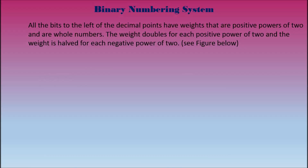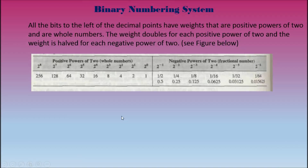All bits to the left of the decimal point have weights that are positive powers of 2 and are whole numbers. The weight doubles for each positive power of 2, and the weight is halved for each negative power of 2. On the figure: 2 to the power of 0 is 1, 2 to the 1 is 2, 2 to the 2 is 4, 2 to the 3 is 8, 2 to the 4 is 16, 2 to the 5 is 32, 2 to the 6 is 64, 2 to the 7 is 128, and 2 to the 8 is 256. On the negative side: 2 to the negative 1 is 0.5, 2 to the negative 2 is 0.25, 2 to the negative 3 is 0.125, 2 to the negative 4 is 0.0625, and 2 to the negative 5 is 1/32, and so on.